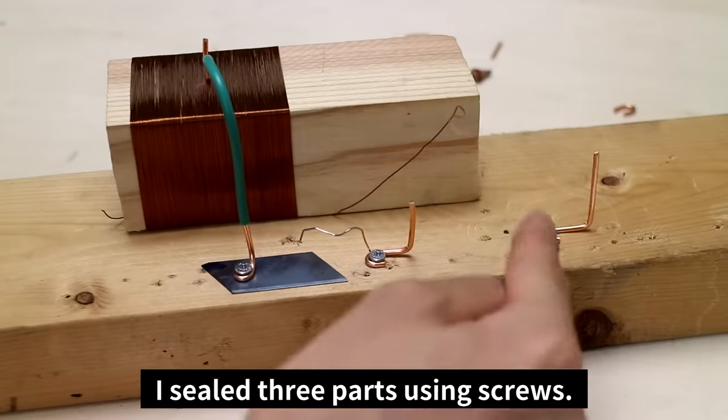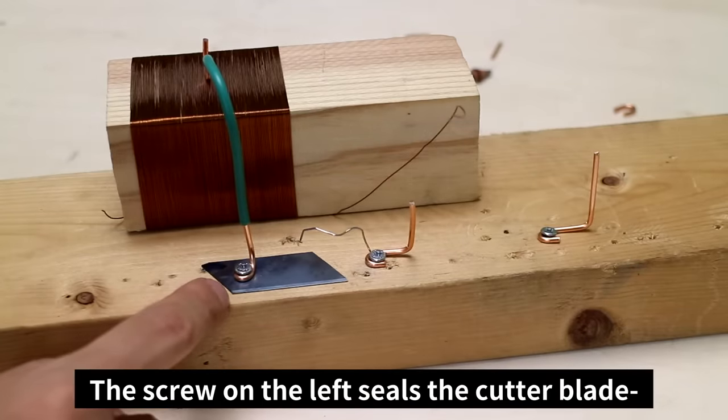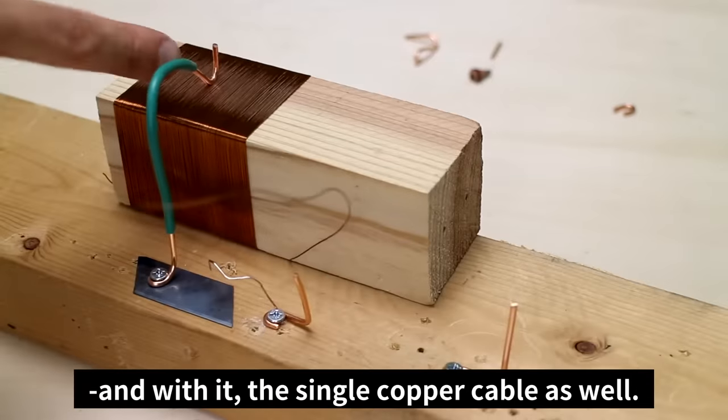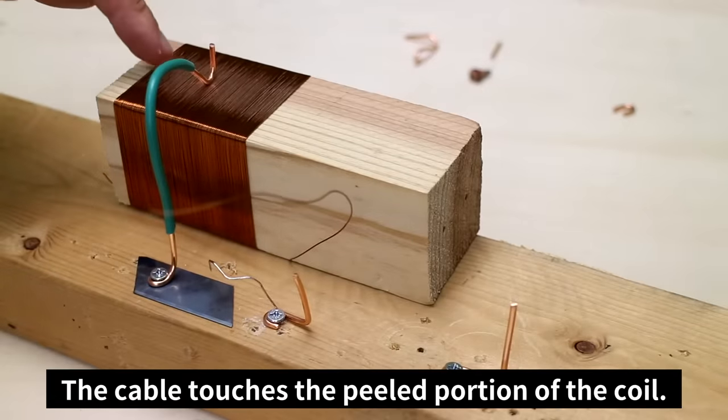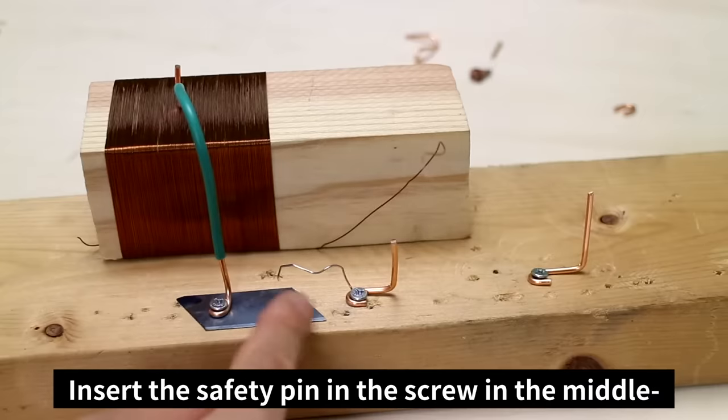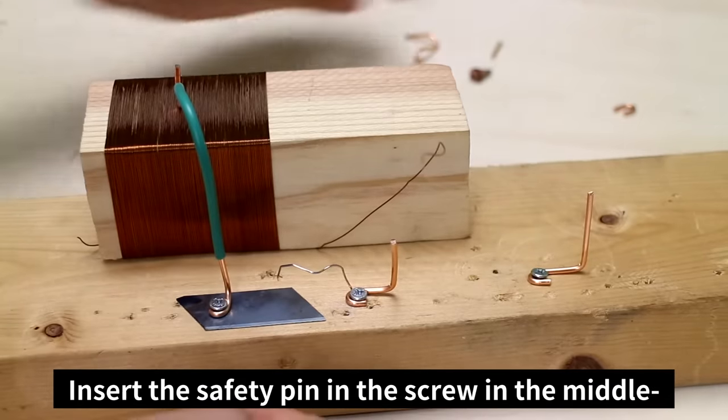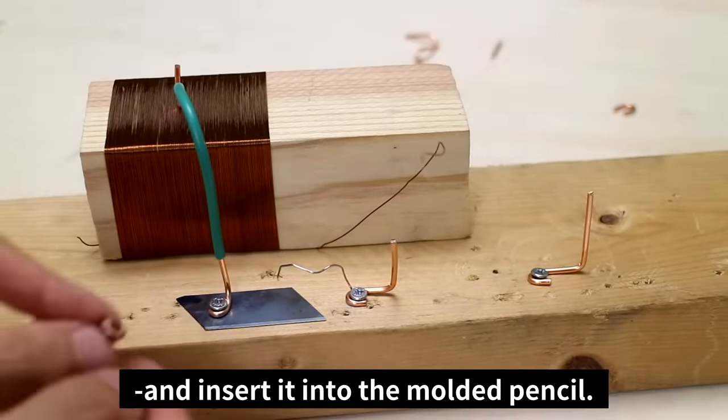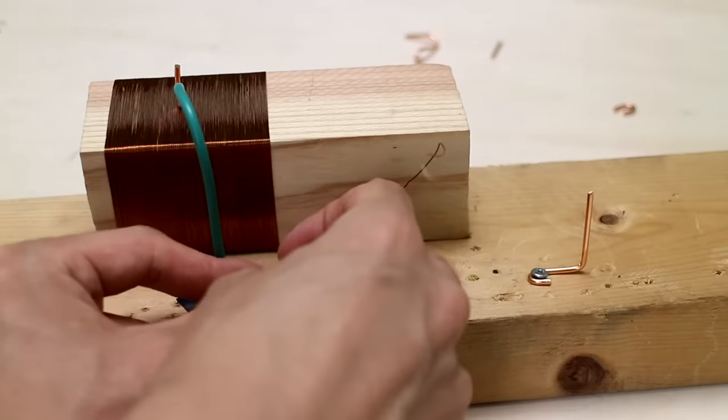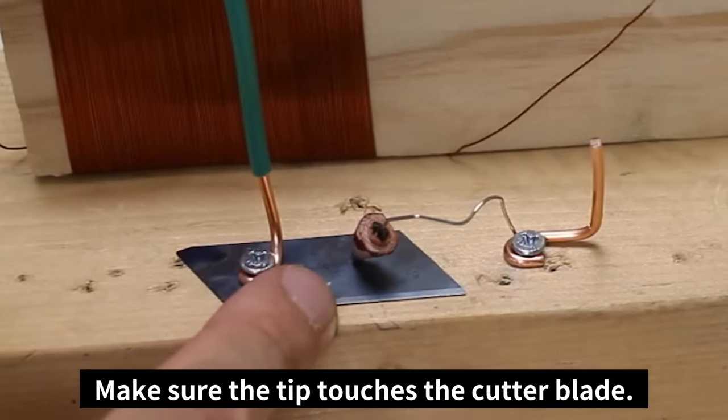Mold the single copper cable like this and fix it with the safety pin. I sealed three parts using screws. The screw on the left seals the cutter blade and with it the single copper cable as well. The cable touches the peeled portion of the coil. Insert the safety pin into the screw in the middle and insert it into the molded pencil. Make sure the tip touches the cutter blade.